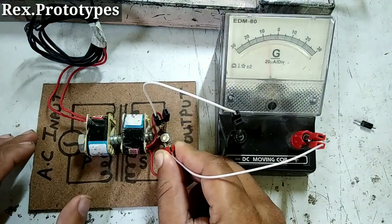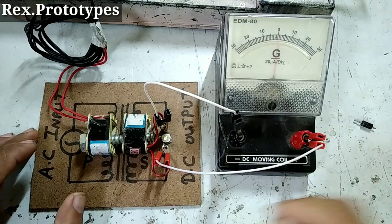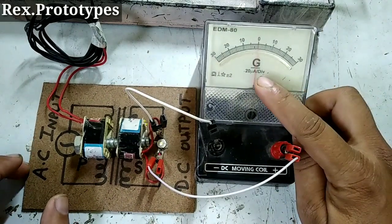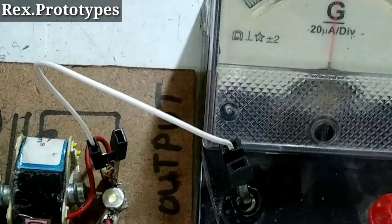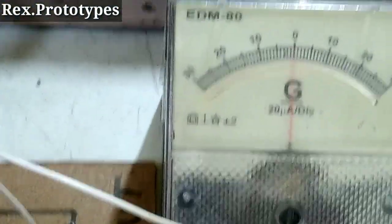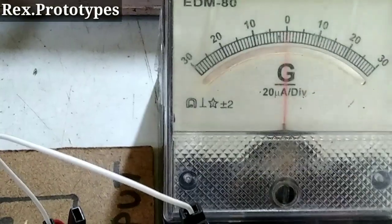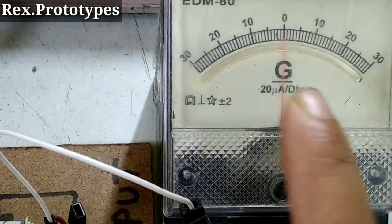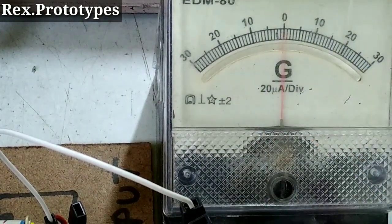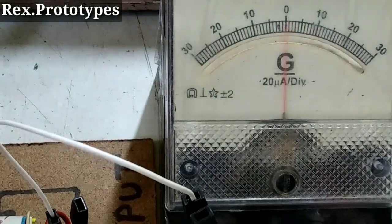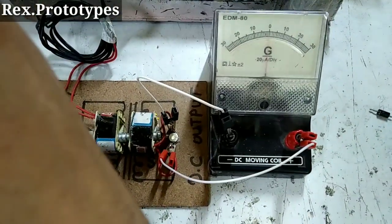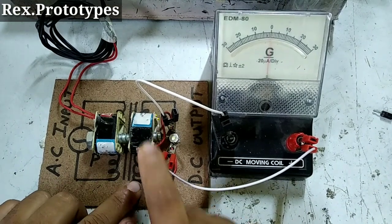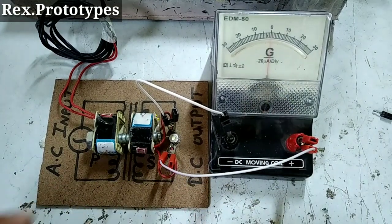When we connect the galvanometer, you can see that the pointer of the galvanometer is fluctuating. See here, which means this is AC. This supply from the secondary coil is AC. Ok.